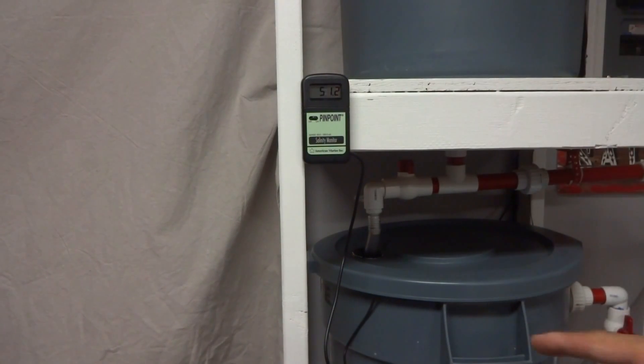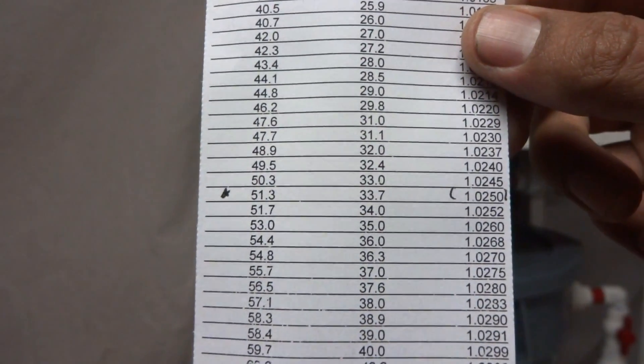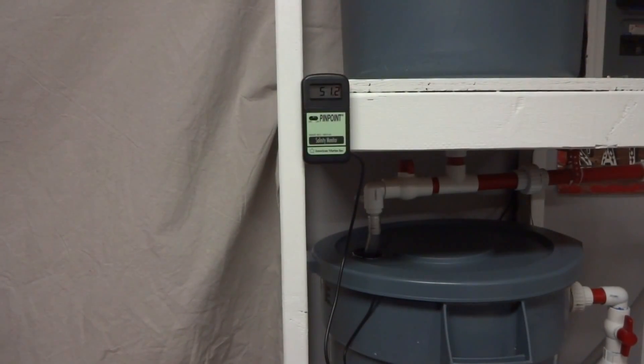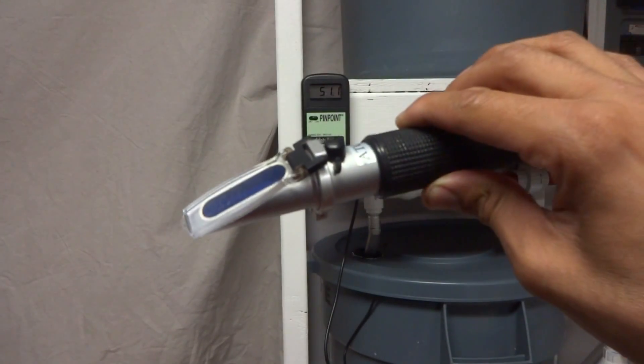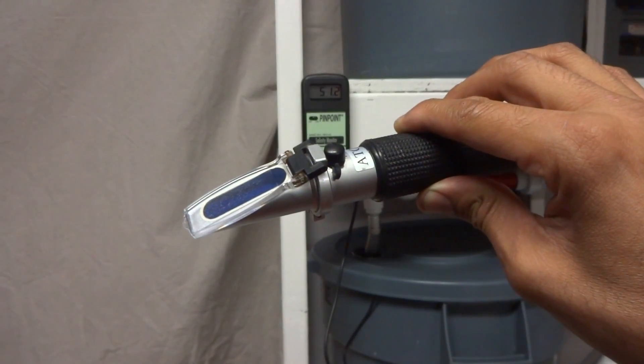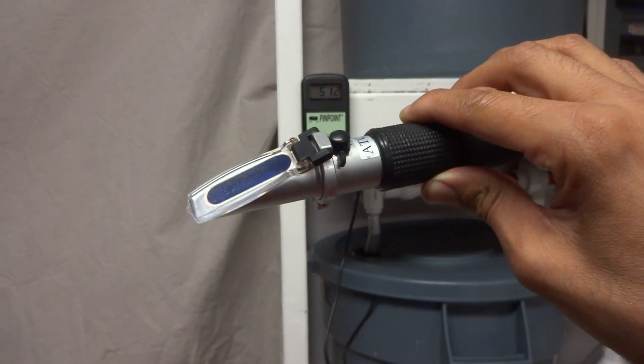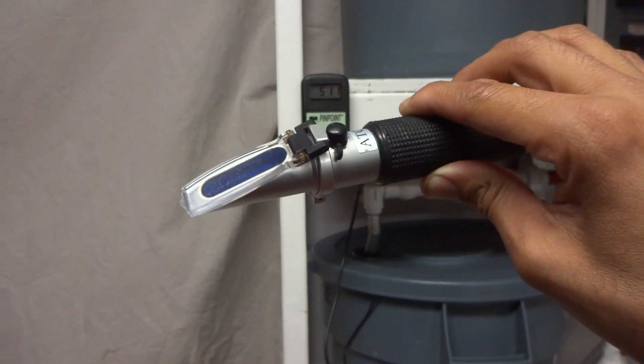The probe is now in the salt water mixing bin. You can see it's reading 1.2, 1.1 which if you look on the reference chart here it's basically 1.025 specific gravity. I like to keep my salt water at 1.026 so I'll be adding some salt to the mix. I did confirm the reading with my refractometer which also reads 1.025 specific gravity.